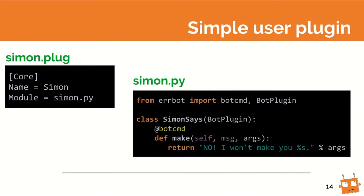Simply, it's a repo or even a standard folder on your machine. You give it a descriptor with a name — that's going to be the name of your plugin — and an entry point, which is a Python module that the bot will load to find your plugins. Your plugin itself just inherits from BotPlugin, which defines the plugin.